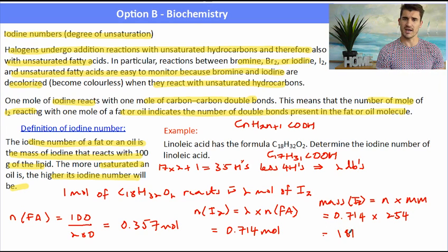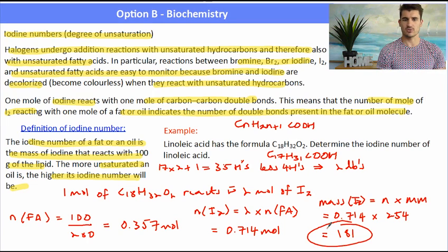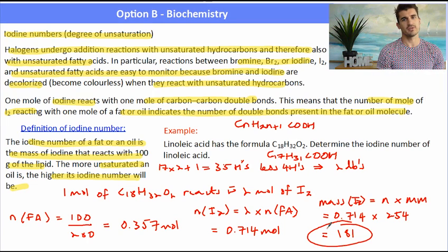The iodine number is 181, which means 181 grams of iodine will react with 100 grams of the lipid.